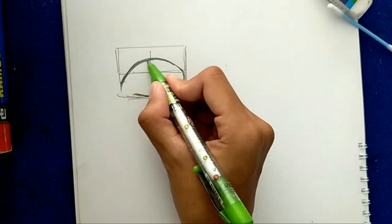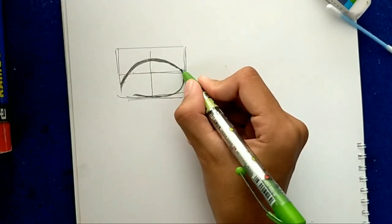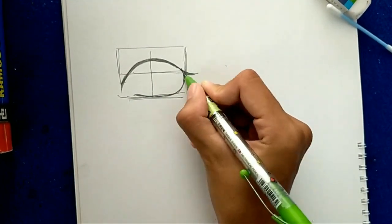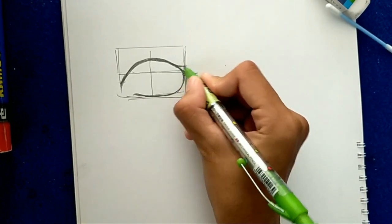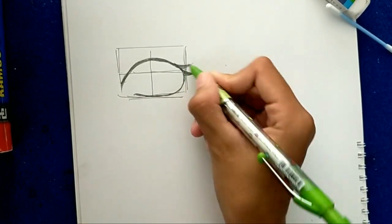Now we will make the eyelashes. Make the eyelashes at the corner of the eye, at the top, and also at the bottom. This is according to your taste.